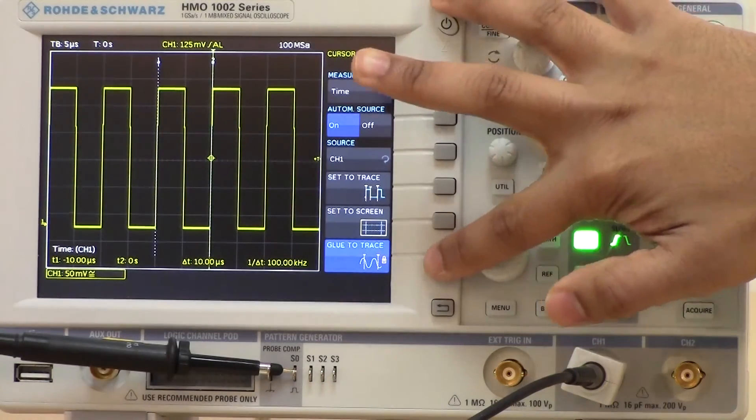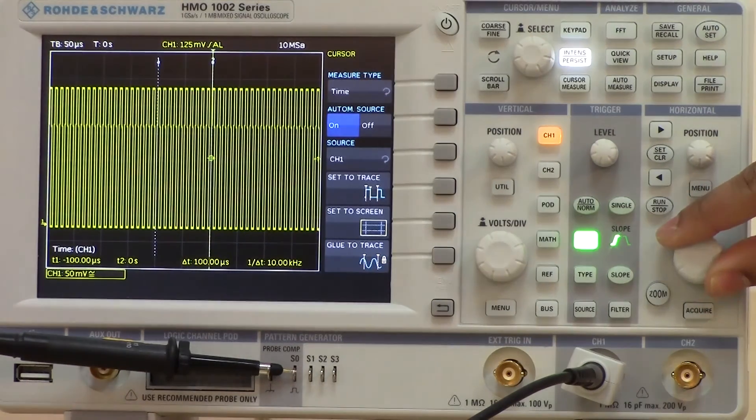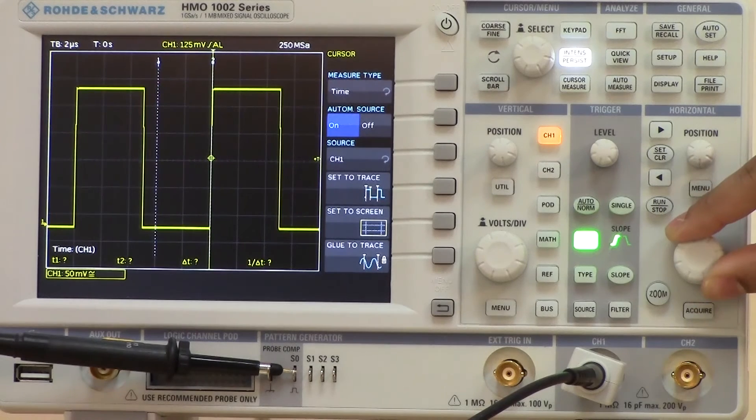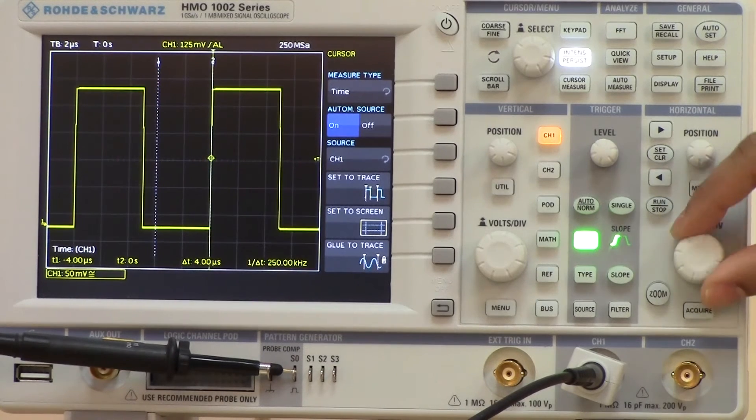If the glue to trace is not active, then the cursors just stay exactly where they were in that particular position when I last left it.